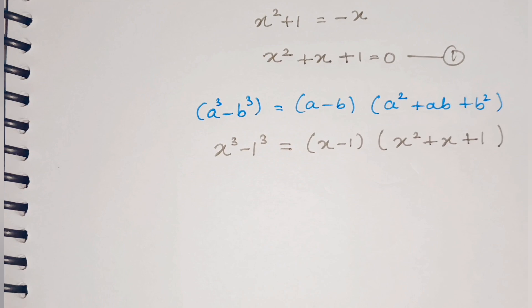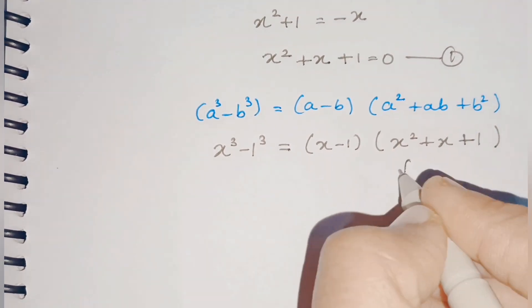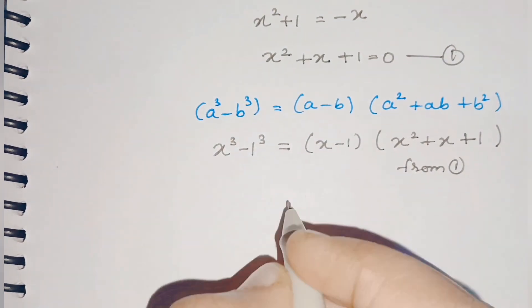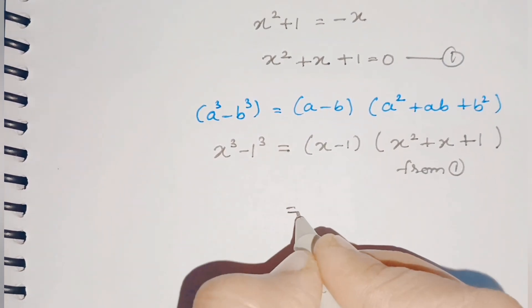As we can see, this bracket is equal to our equation 1. From equation 1, we can write it as 0, and 0 times any number is again 0.